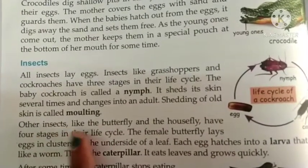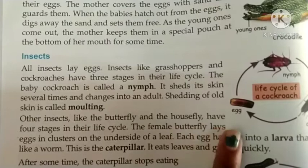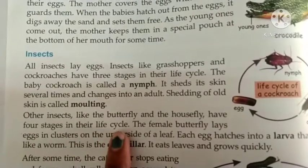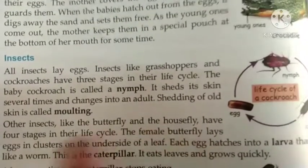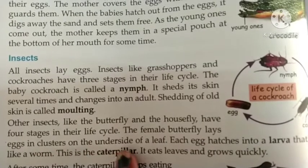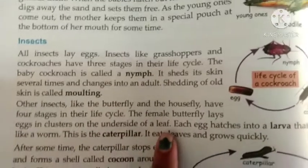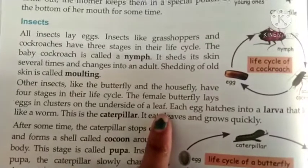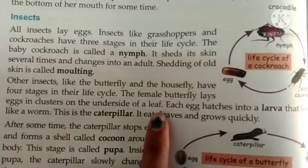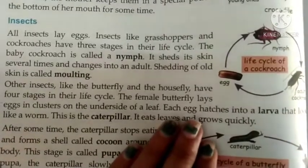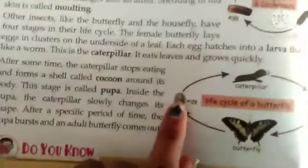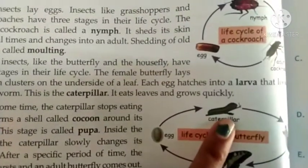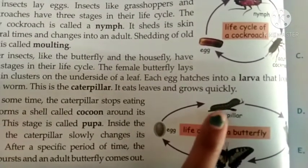Other insects like the butterfly and the housefly have four stages in their life cycle. The female butterfly lays eggs in a cluster on the underside of a leaf. Each egg hatches into a larva that looks like a worm — this is the caterpillar. You can see in the picture: egg → caterpillar.